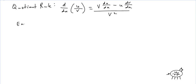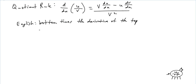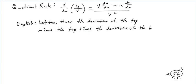Let's say it in English, because this is the way I remember it. It's the bottom times the derivative of the top, minus the top times the derivative of the bottom, all over the bottom squared.